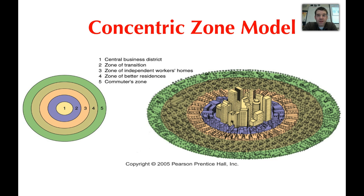Looking at the concentric zone model, it's very similar to the Von Thunen model with the concept of concentric circles based on a market center. But compared to the Von Thunen model, the center in the concentric zone model is our central business district, or CBD — not really a population center, but a convergence of services with a large threshold and range where people converge to utilize those things.